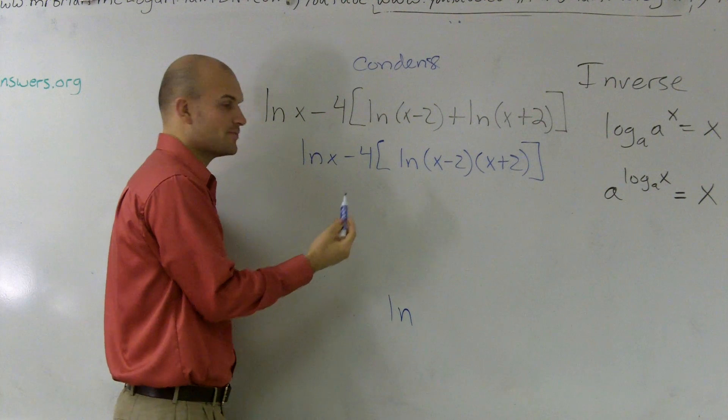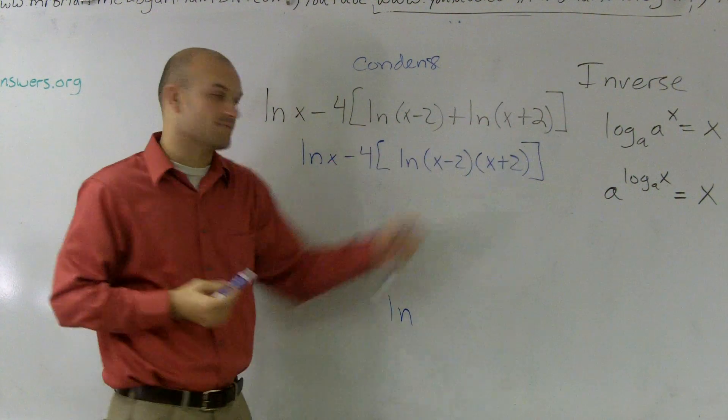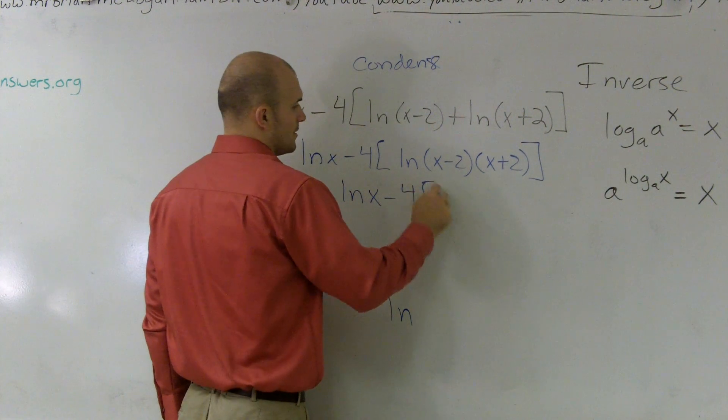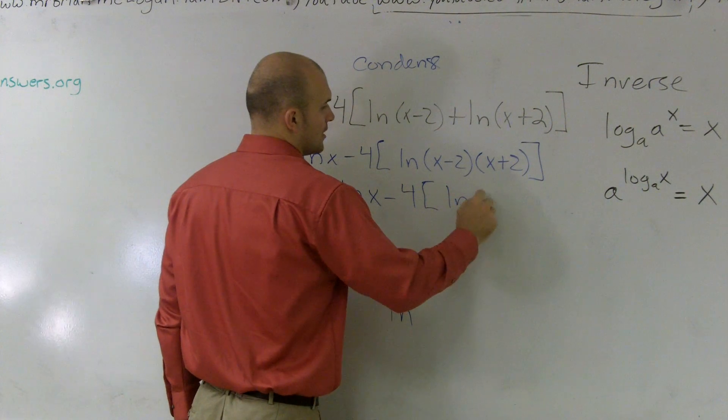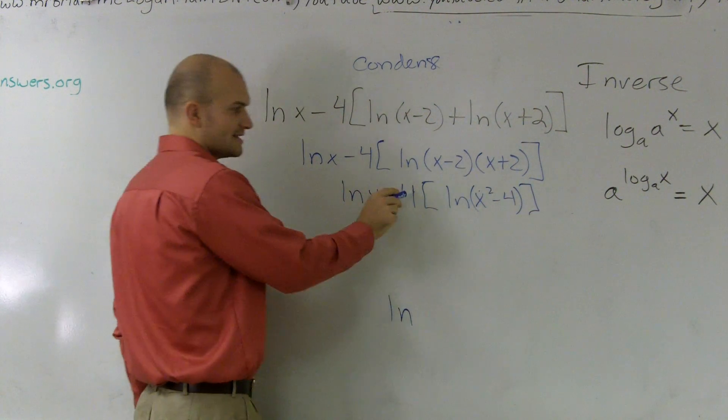Then the next thing is looking for my exponents. I understand that I can bring my number in front and put it as my exponent. So actually, I'll just do one step at a time not to confuse you. So let's do 4 ln of x squared minus 4.